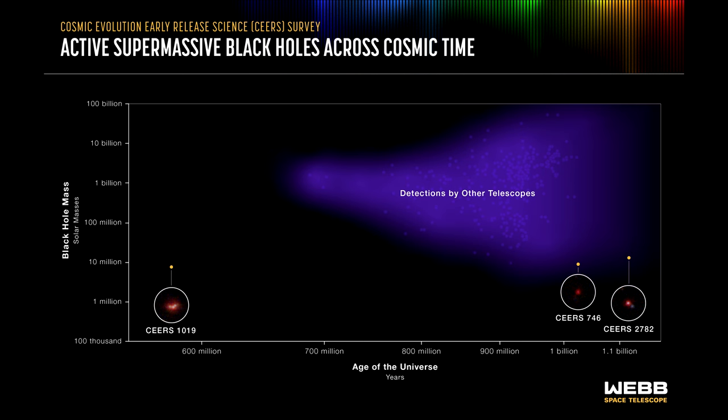A theory driven by the fact that the James Webb Space Telescope has found large galaxies that existed before the current lambda-cold-dark matter cosmology predicted they would.